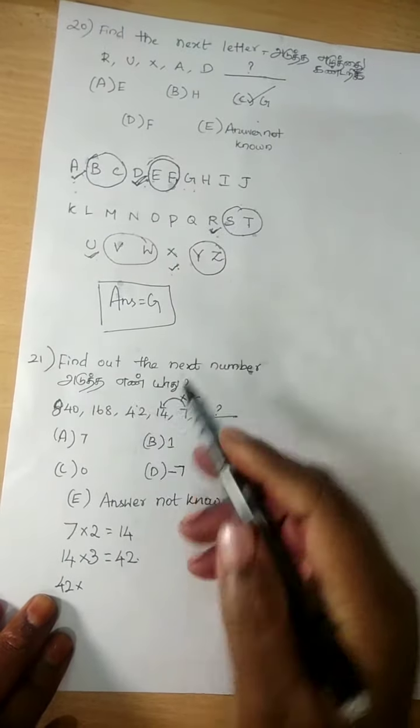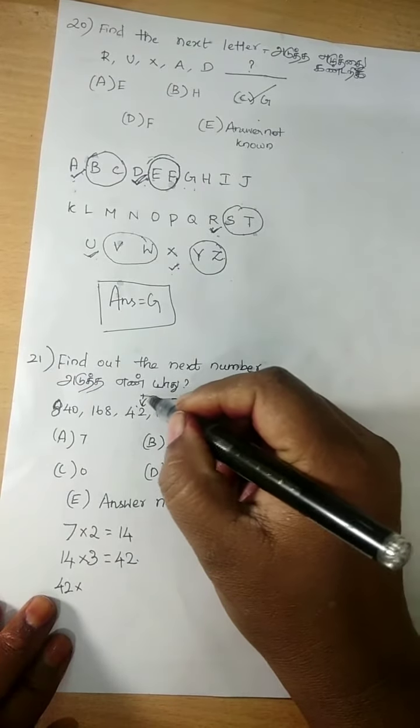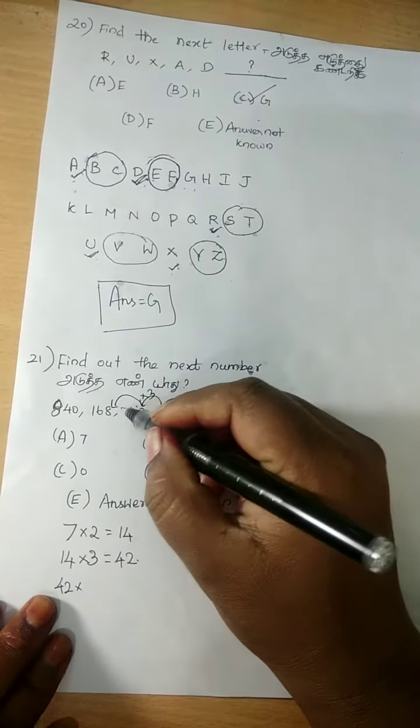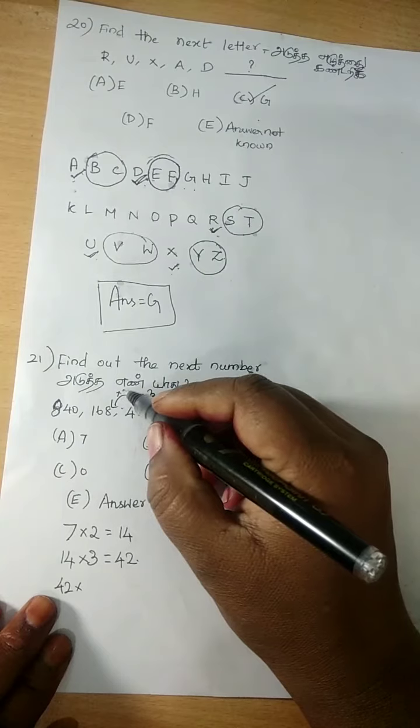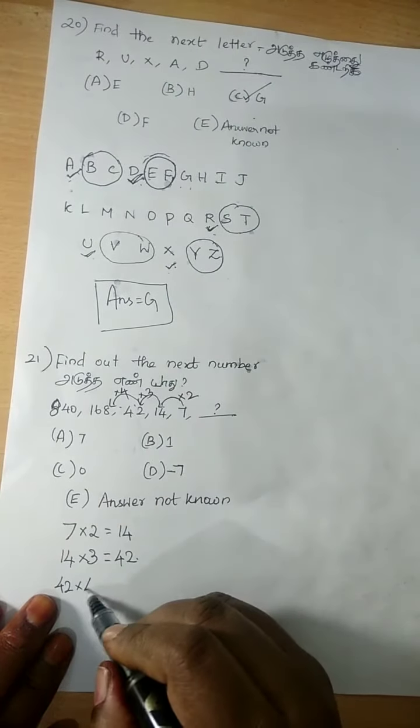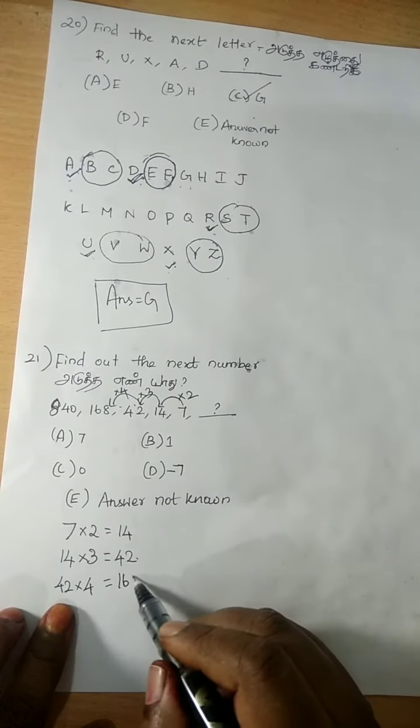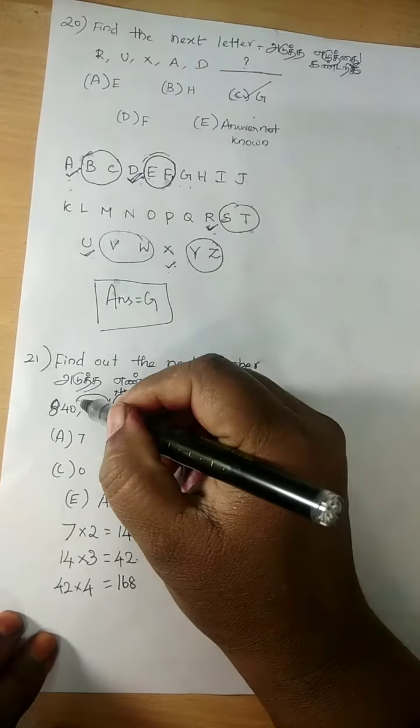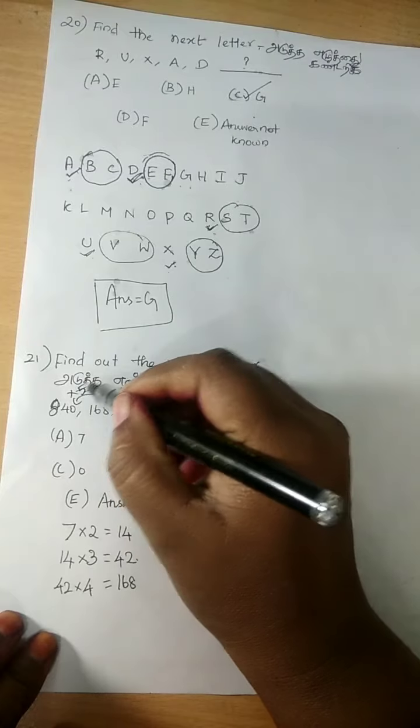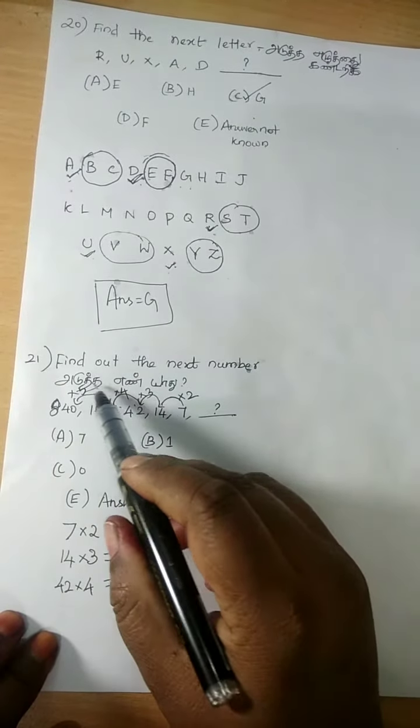Next number 42. 14 into 3 is 42. Then 42 into 4. Let's try 4. 42 times 4 is 168. And then again, 168 into 5. We got 2, 3, 4, 5 in order.